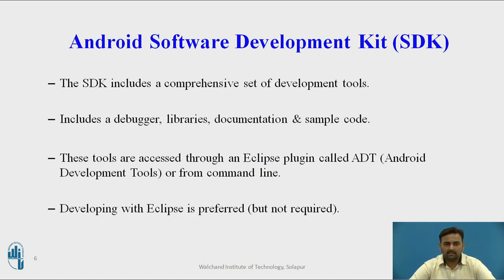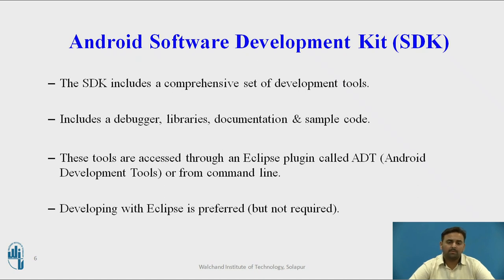There is one Software Development Kit in Android, in short called the SDK. It contains a set of development tools, such as a debugger which is used mainly for debugging your ongoing developing application. There are certain libraries — a library is nothing but a set of ready-made functions which a developer can use as-is. It can help during the development of a particular application. While developing a particular application in Android, we also have to perform certain documentation. This facility is also provided by the software development tool. Due to these features, the SDK is very useful for developers.